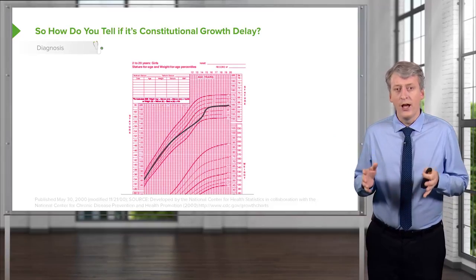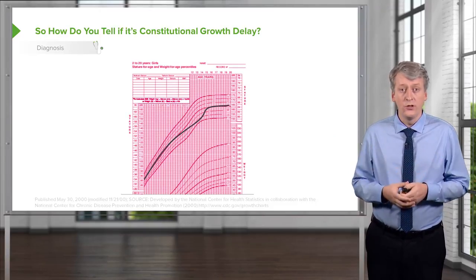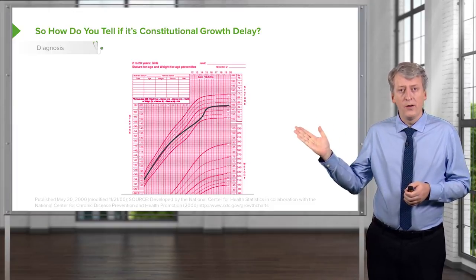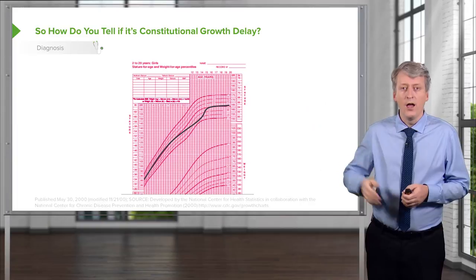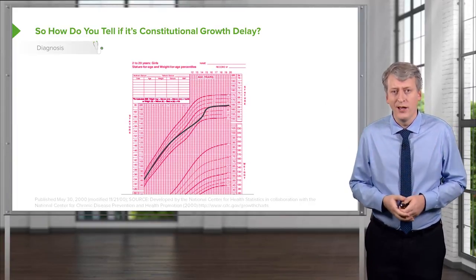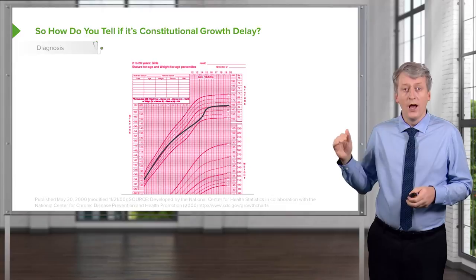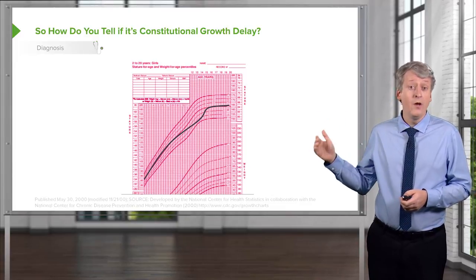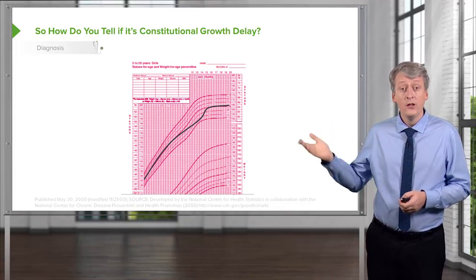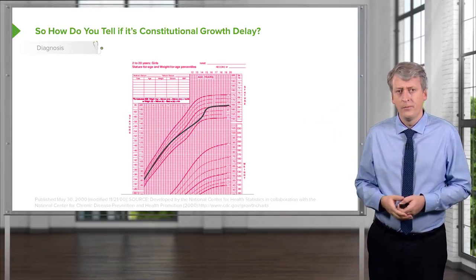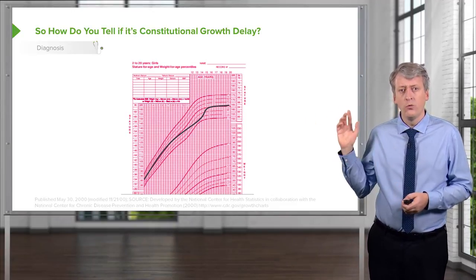Here is a child who has a constitutional growth delay. You can see they were growing along the 50th percentile, failed to grow for a period of time, and then suddenly grew a lot. I'm sure you know someone who did this in high school — somebody who grew a lot a little bit later in life. This child ended up at their appropriate height, started at their appropriate height, just did their growing a bit later. The curve was different.